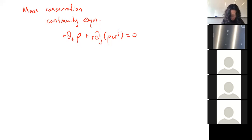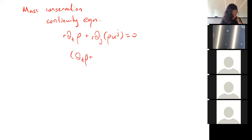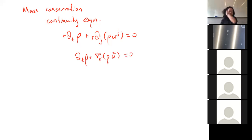All this is saying is that any change in the matter density has to be related to physical chunks of matter entering or leaving the local volume.